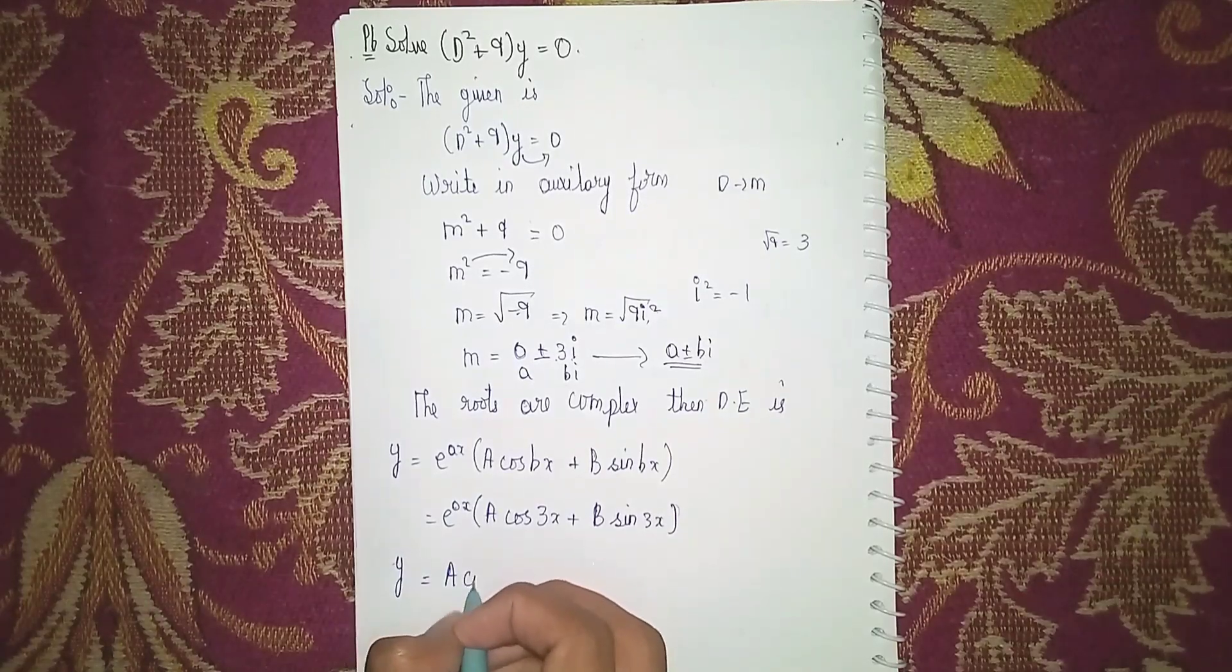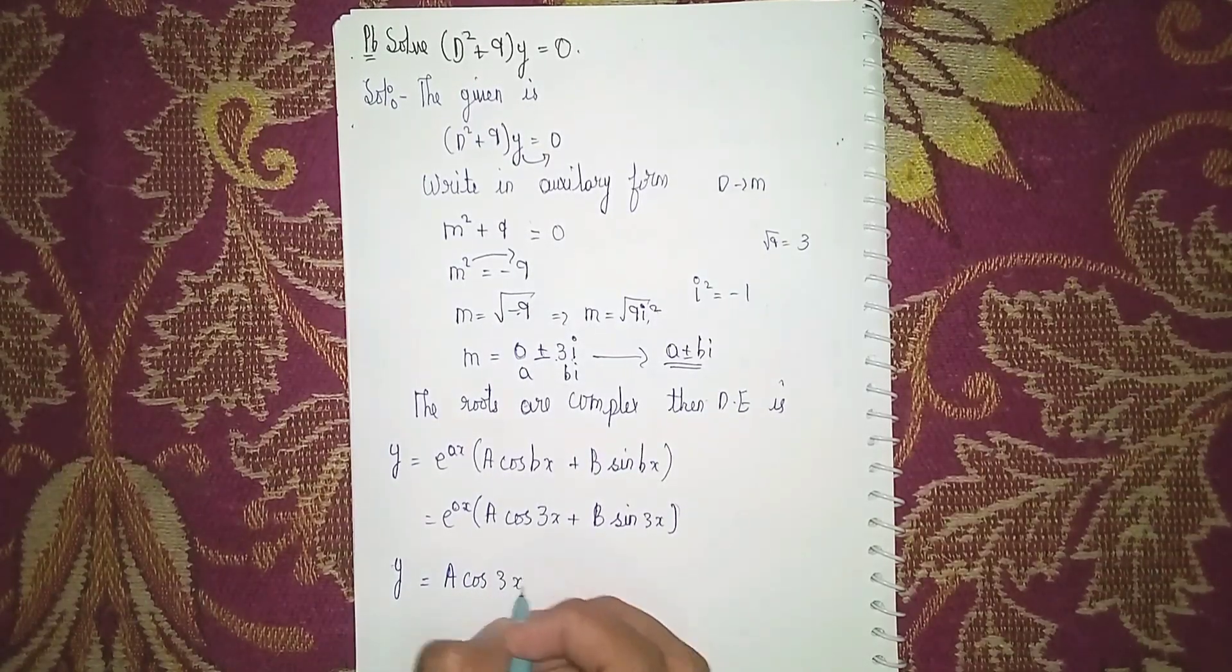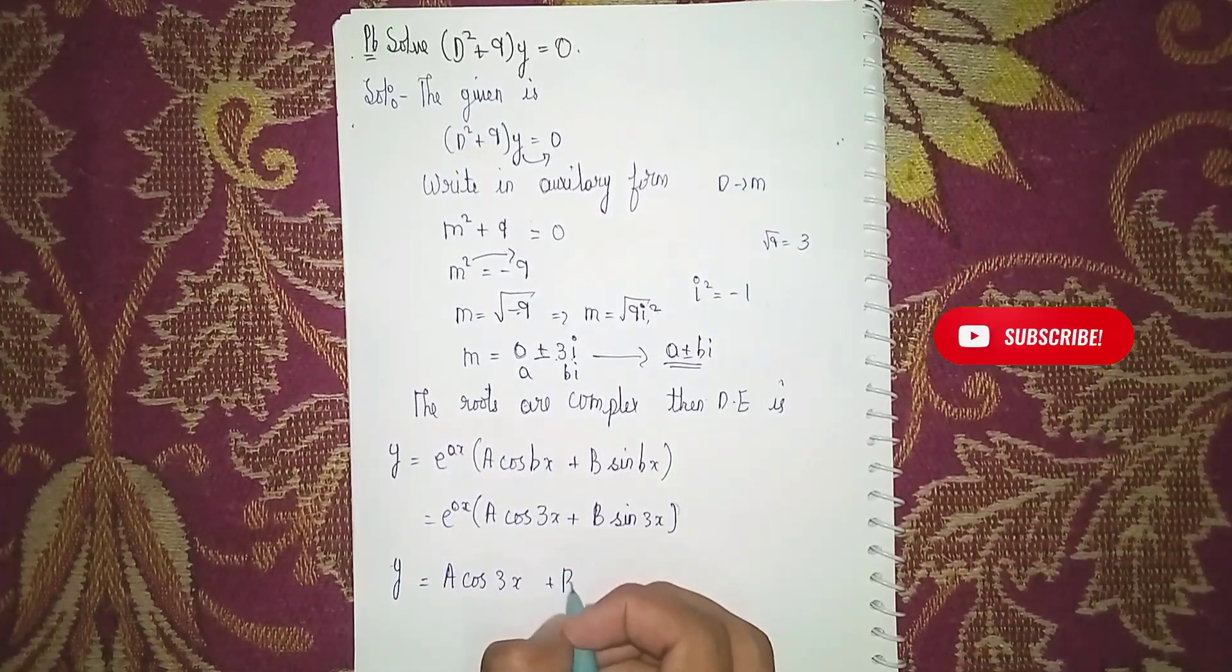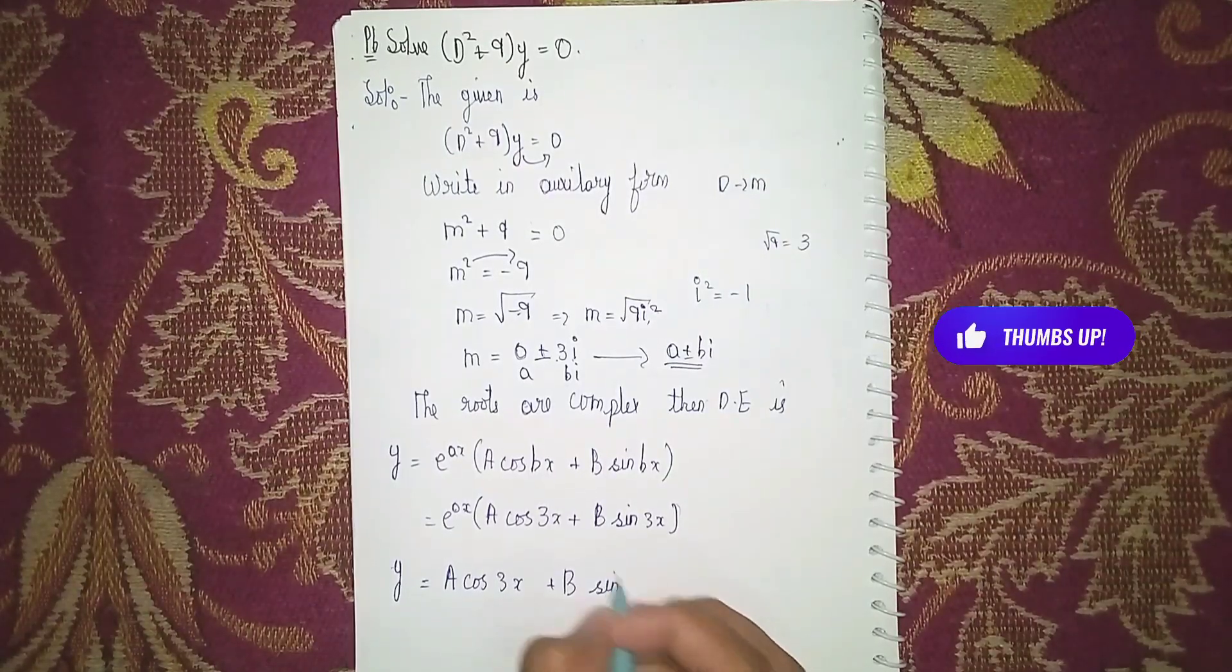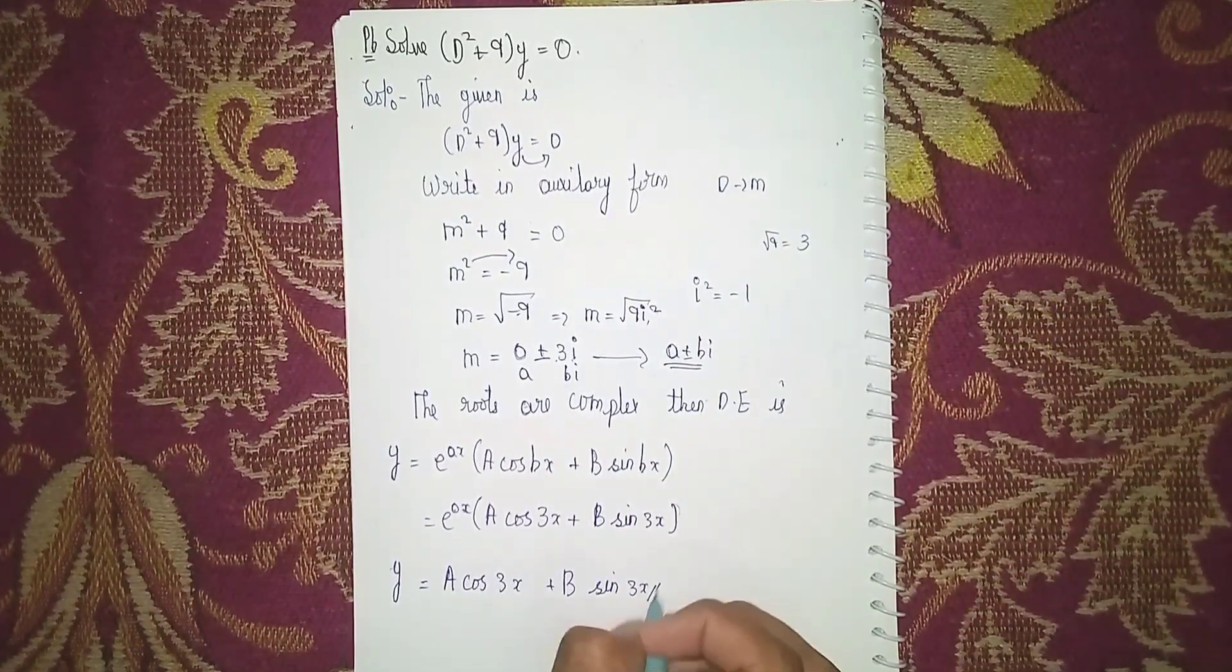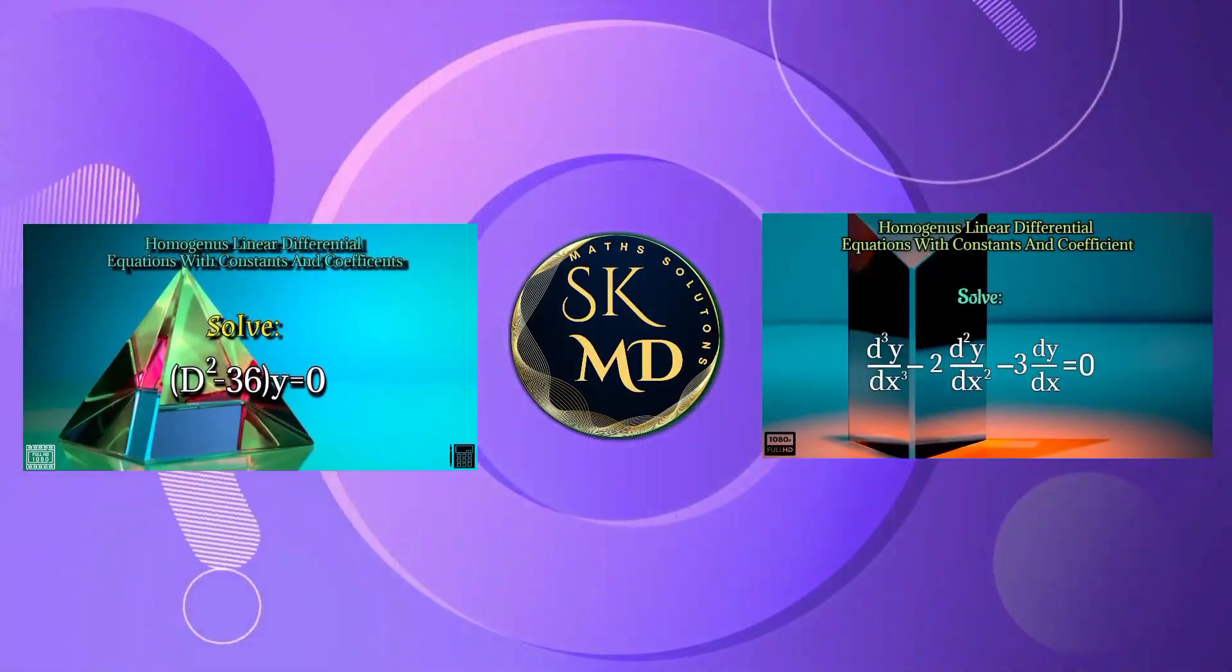y = a cos 3x + b sin 3x. This is our answer. Thanks for watching.